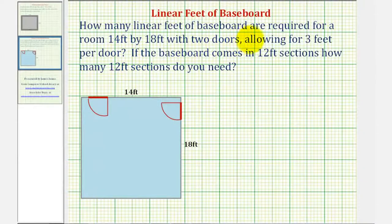How many linear feet of baseboard are required for a room 14 feet by 18 feet with two doors, allowing for three feet per door? Also, if the baseboard comes in 12-foot sections, how many 12-foot sections do you need?